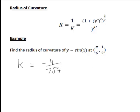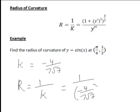For the example we just looked at, the curvature was negative 4 divided by 7√7. So the radius of curvature of y equals sin x at the point (π/6, 1/2) is 1 divided by the curvature, which works out to be negative 7√7 divided by 4.